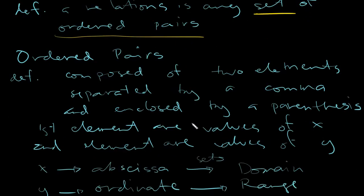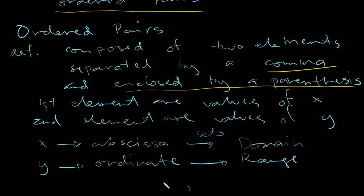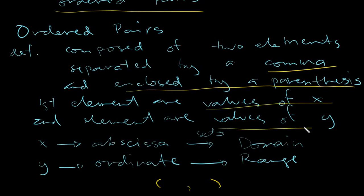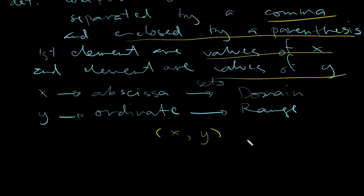Relations are just many ordered pairs. Ordered pairs are simply composed of two elements separated by a comma and enclosed by a parenthesis. The first element contains the values of x, and the second contains the values of y. We call all the values of x the abscissa, and the set of those abscissas is named the domain. For y, it's called the ordinate, and the set of ordinates is simply the range.